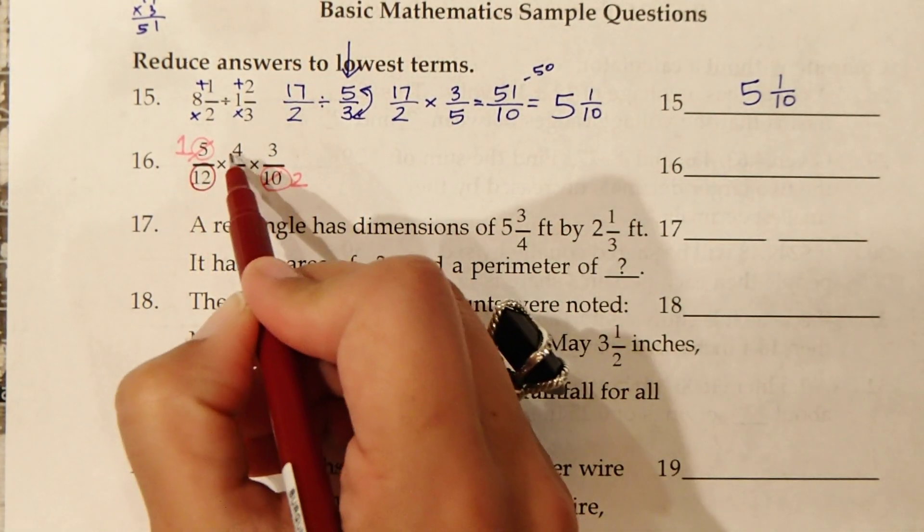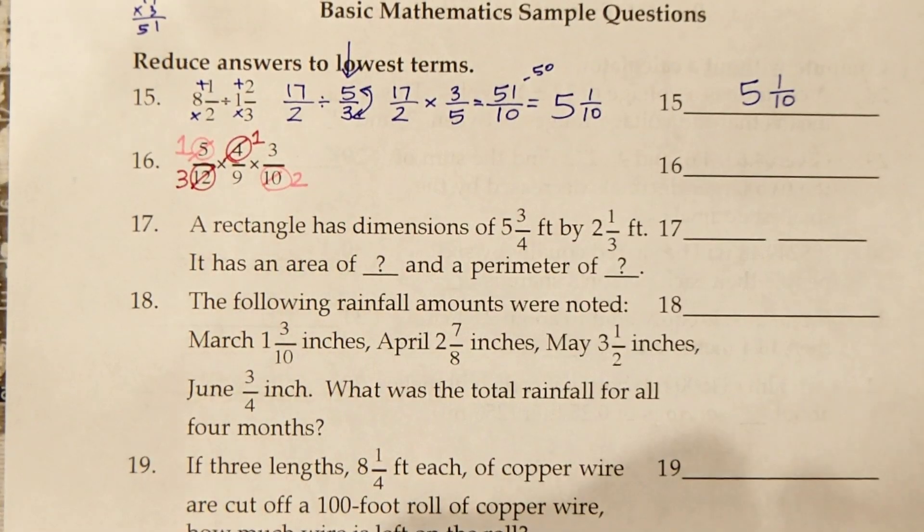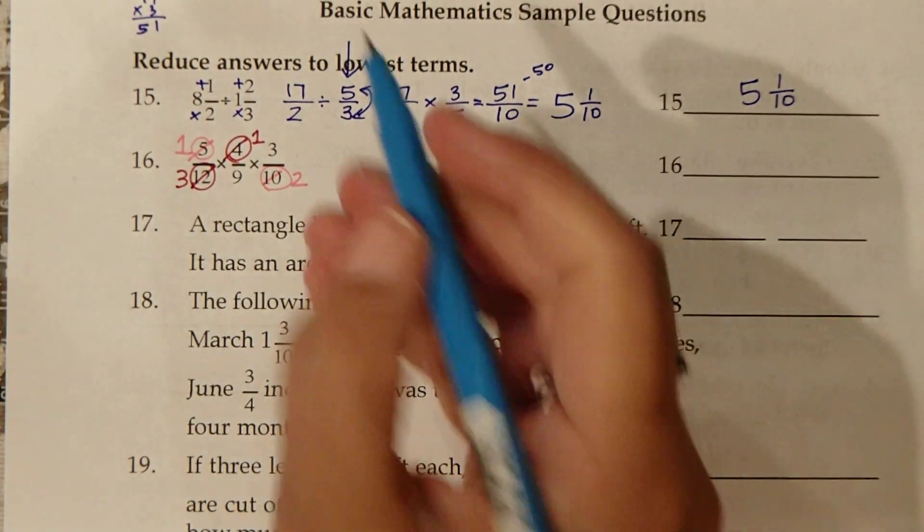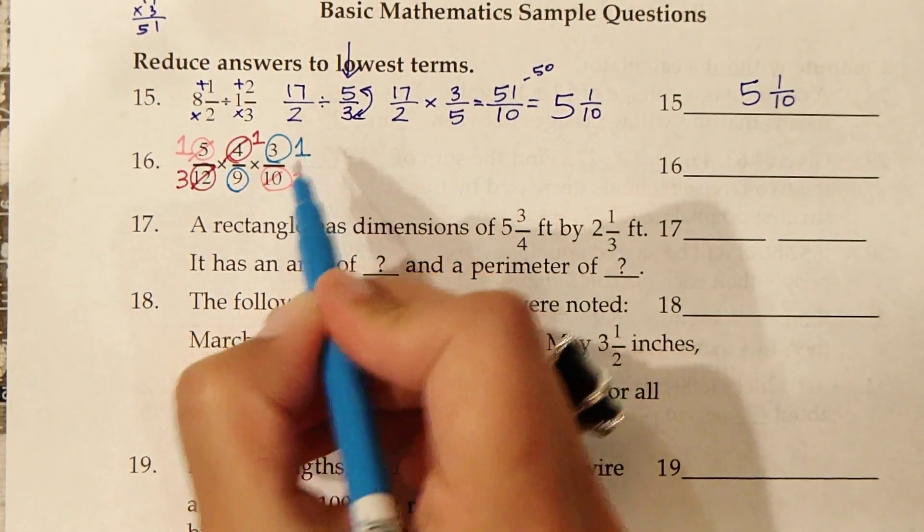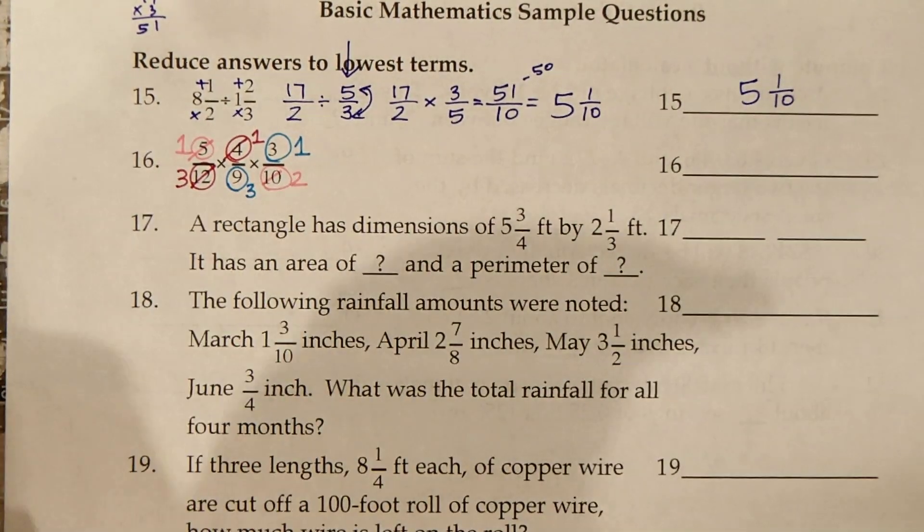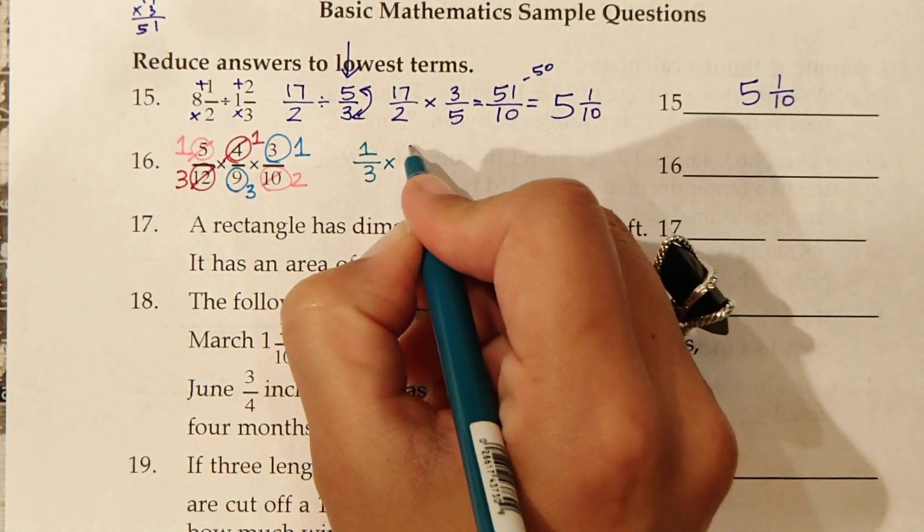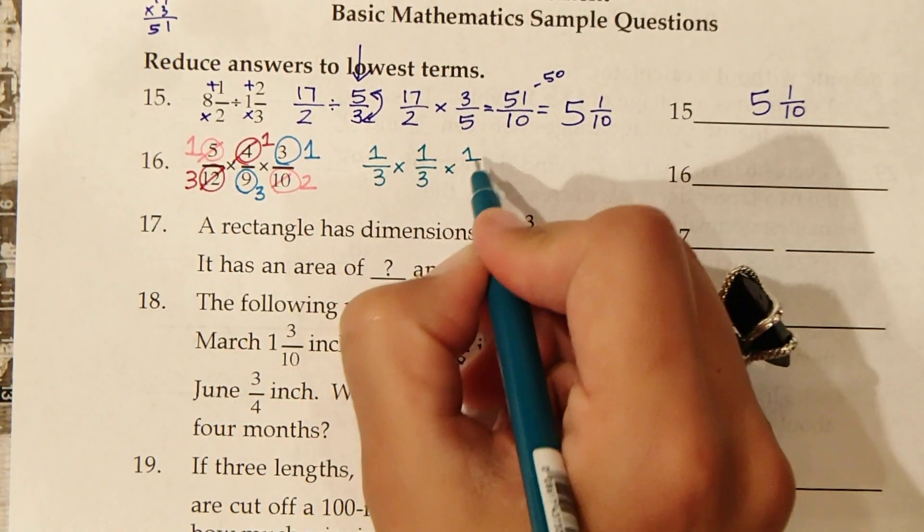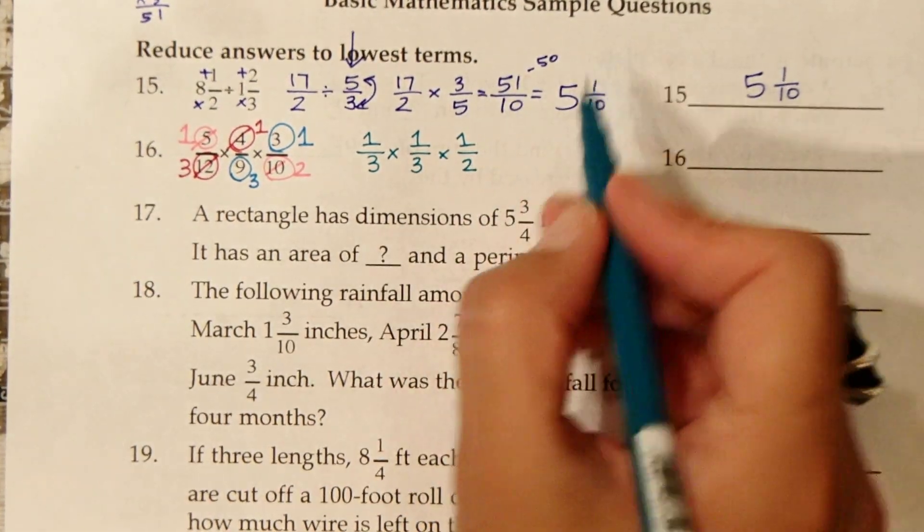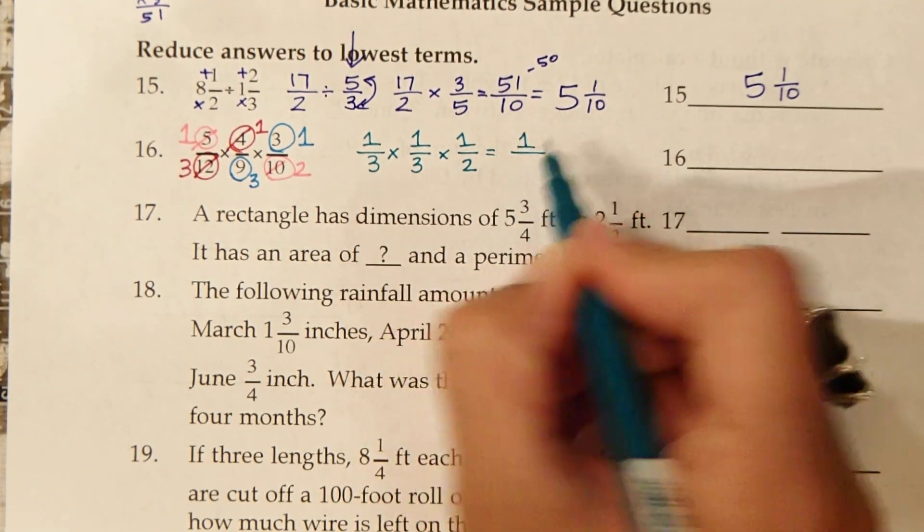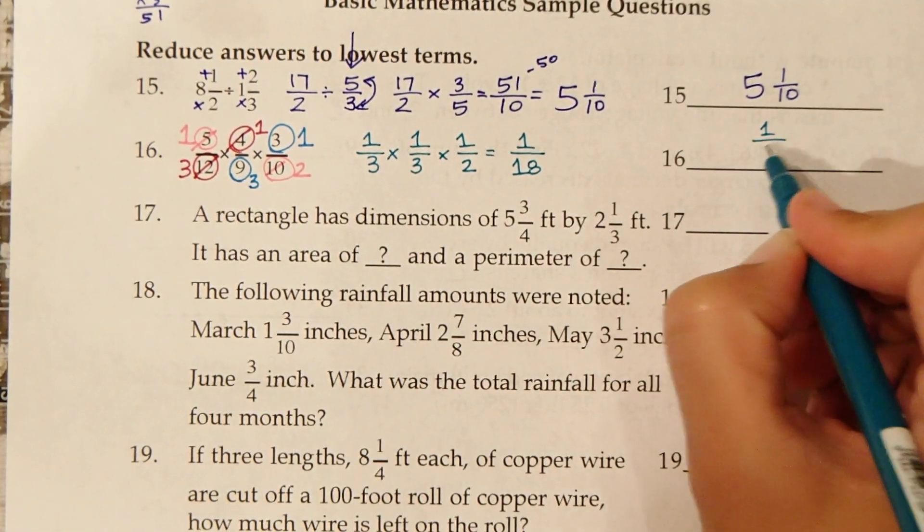This 12 and this 4 can both be divided by 4. 4 divided by 4 is 1, 12 divided by 4 is 3. Here we have more that can be reduced, 3 over 9 can both be divided by 3. So I'm going to rewrite our new reduced fractions: 1 third times 1 third times 1 half. 1 times 1 times 1 is 1. 3 times 3 is 9, 9 times 2 is 18. So our answer is 1 18th.